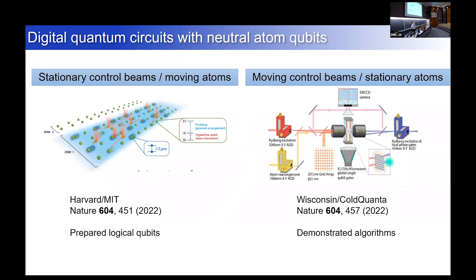What we did was have moving control beams and stationary atoms — we didn't invoke any atom motion during the circuit, only using atom motion for rearrangement to populate the array. Having done that, we kept atoms stationary and scanned control beams using acousto-optic deflectors. We used our device to demonstrate algorithms including Grover's algorithm. One technical note: we use the Pichler gate where you illuminate both atoms at the same time. When you deflect a beam with an acousto-optic deflector you get a frequency shift — but the Rydberg excitation is two-photon with a blue and an infrared photon, so if you make the sign of the frequency shift equal and opposite on the two wavelengths, you can be resonant on both atoms at the same time, enabling simultaneous addressing.